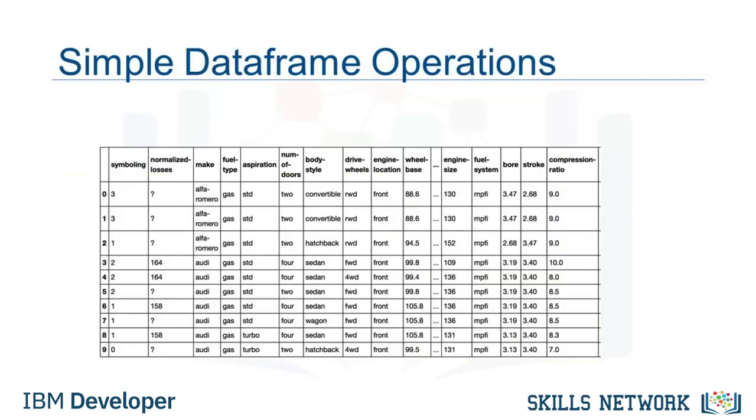In Python, we usually perform operations along columns. Each row of the column represents a sample, i.e., a different used car in the database.